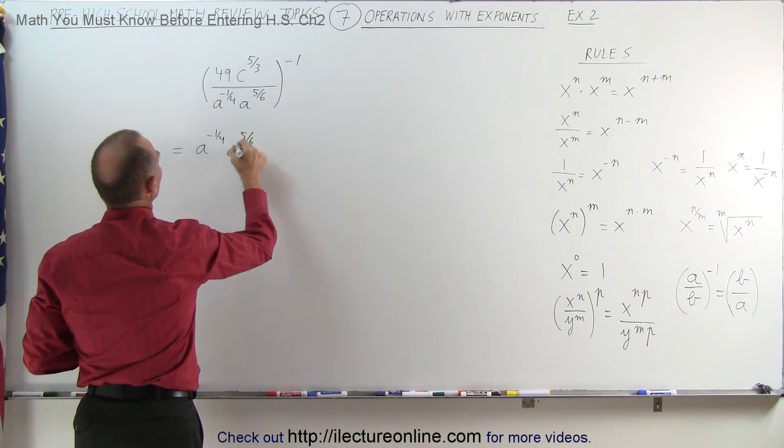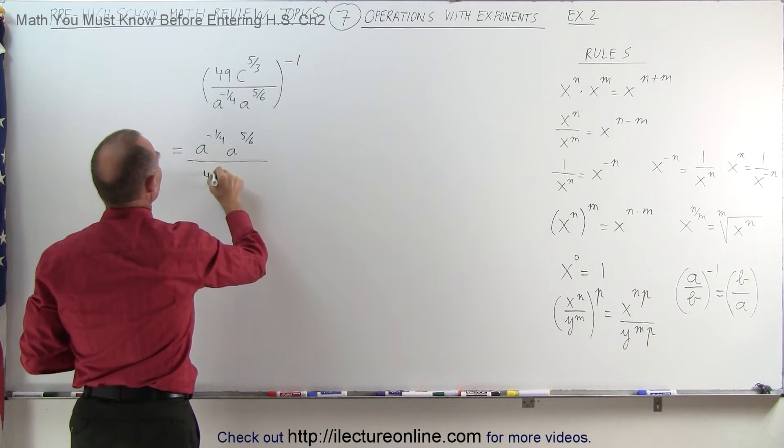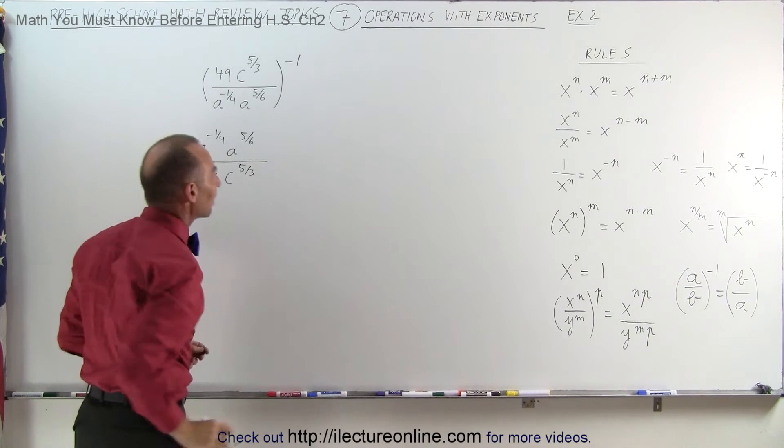a to the 5 over 6, divided by 49c to the 5 thirds power, and simply then remove the negative 1 exponent.